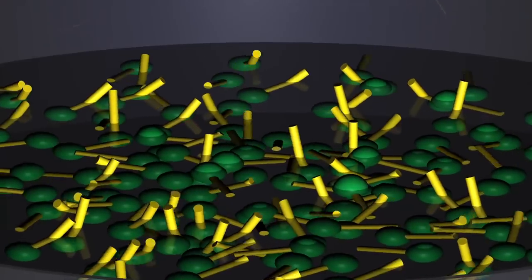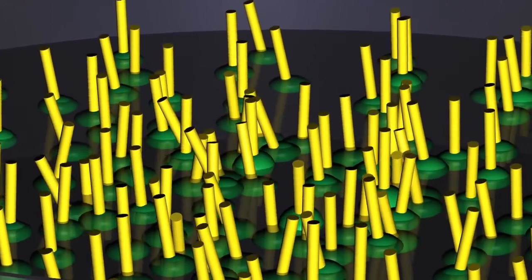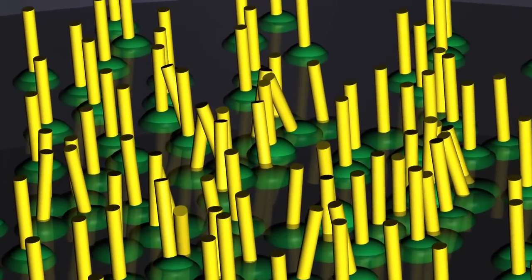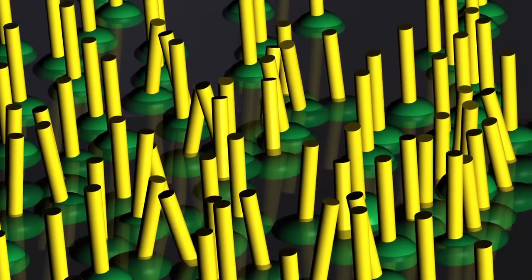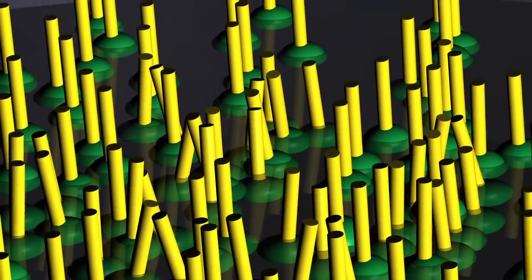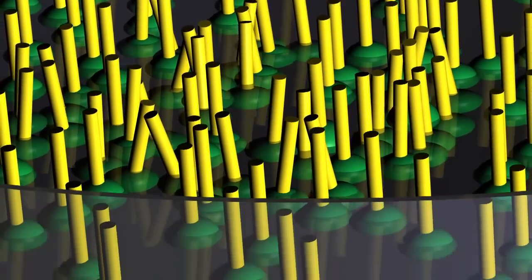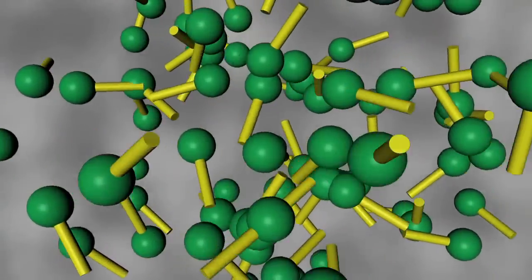The surfactant molecules immediately go to the interface and the polar heads, doing what nature likes, are drawn to the polar water molecules. But when the surface is saturated, when no more surfactant molecules will fit, something really interesting happens.